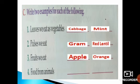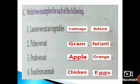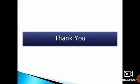Number 4 — food from animals. We get chicken, eggs, meat, and milk. Write anything which you like to write. Okay children, that's all for now. Thank you.